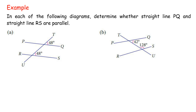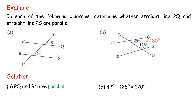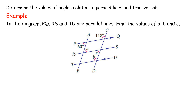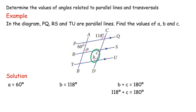Example: determine whether two straight lines are parallel. Solution: these lines are parallel because a pair of corresponding angles are equal. These lines are not parallel because a pair of consecutive interior angles do not add up to 180 degrees: 81 degrees plus 101 degrees equals 182 degrees. These lines are parallel because a pair of alternate interior angles are equal. In each of the following diagrams, determine whether straight line PQ and straight line RS are parallel. Solution: A — PQ and RS are parallel. B — 42 degrees plus 128 degrees equals 170 degrees, which does not equal 180 degrees; thus PQ and RS are not parallel.